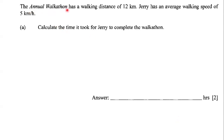The annual walkathon has a walking distance of 12 kilometers. Jerry has an average walking speed of 5 kilometers per hour. Calculate the time it took for Jerry to complete the walkathon.